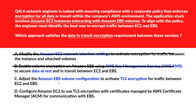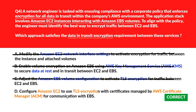Option C says: adjust the Amazon EBS volume configuration to activate TLS encryption for traffic between EC2 and EBS. EBS doesn't support TLS settings in volume configuration — encryption must be handled by EC2. Wrong answer. Option D says: configure Amazon EC2 to use TLS encryption with certificates managed by AWS Certificate Manager (ACM) for communications with EBS. EC2 instances can use TLS with certificates from ACM to encrypt data in transit before writing to EBS volumes. Option D is the right answer.